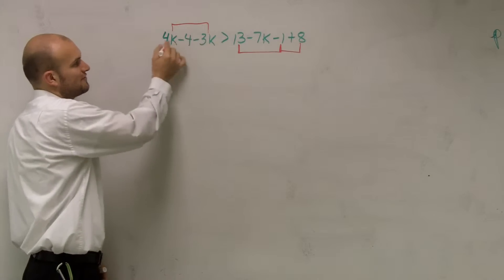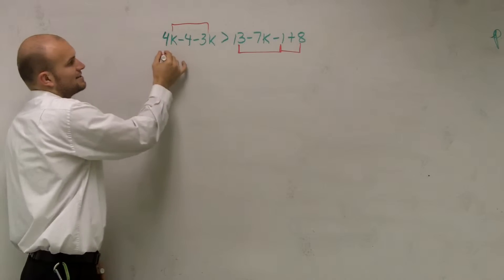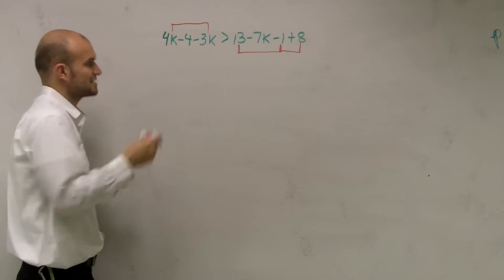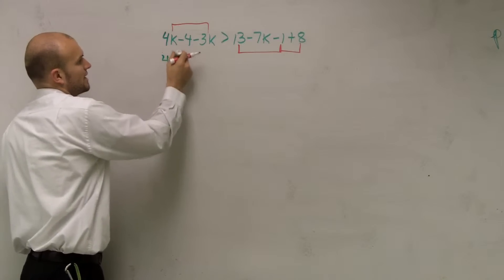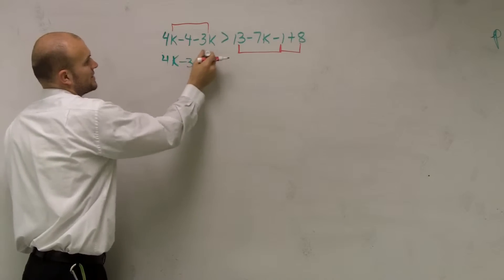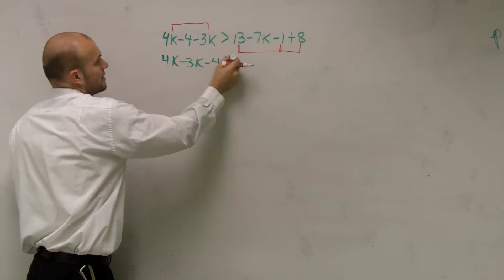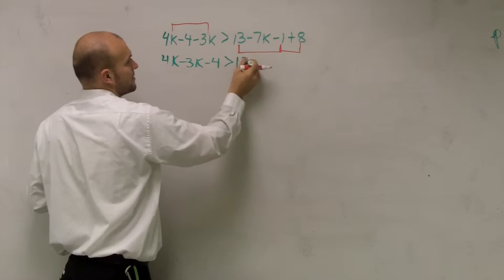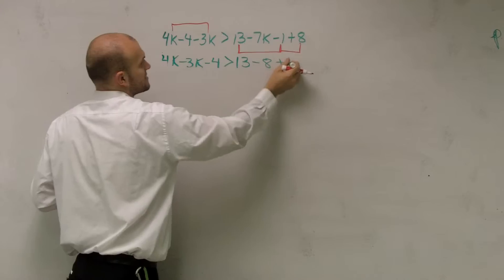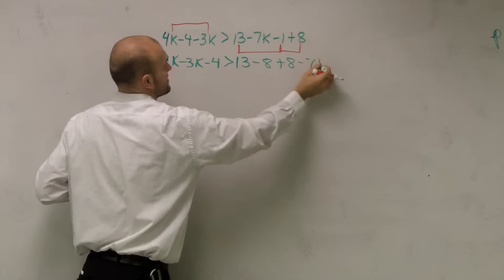So what you can do is if you can say 4K minus 3K, a lot of times I just like to rewrite it so they're next to each other. So I write 4K minus 3K minus 4 is greater than, and let's write these together, 13 minus 8 plus 8 minus 7K.